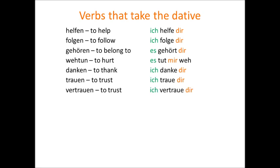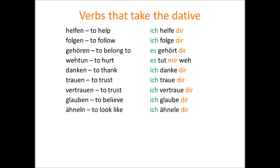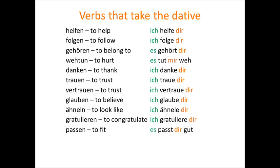Both trauen and vertrauen, which mean to trust. For example, ich traue dir and ich vertraue dir, both meaning I trust you. Glauben, which means to believe. For example, ich glaube dir, I believe you. Ähneln, which means to look like. For example, ich ähnele dir, I look like you. Gratulieren, which means to congratulate. For example, ich gratuliere dir. Passen, which means to fit. For example, es passt dir gut, it fits you well. And finally, schaden, which means to harm. For example, es schadet dir, it's harming you.